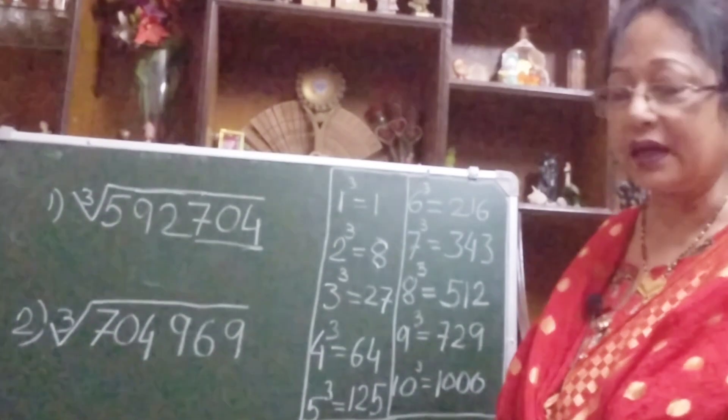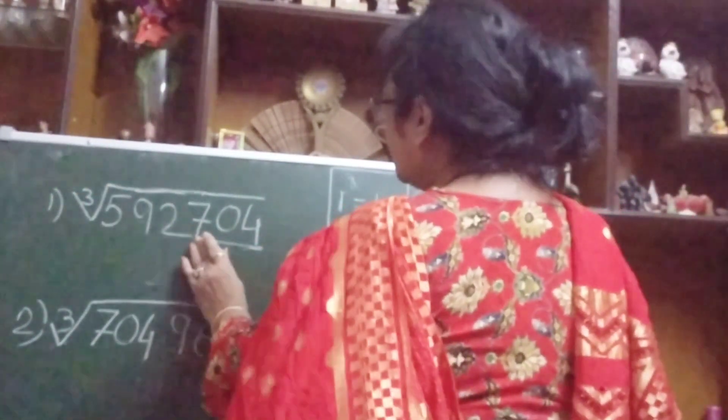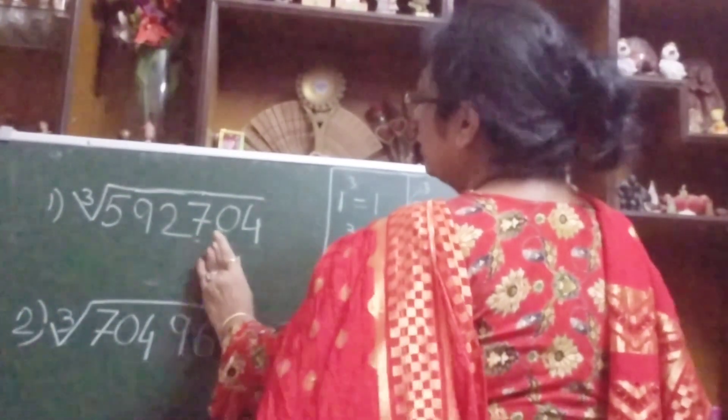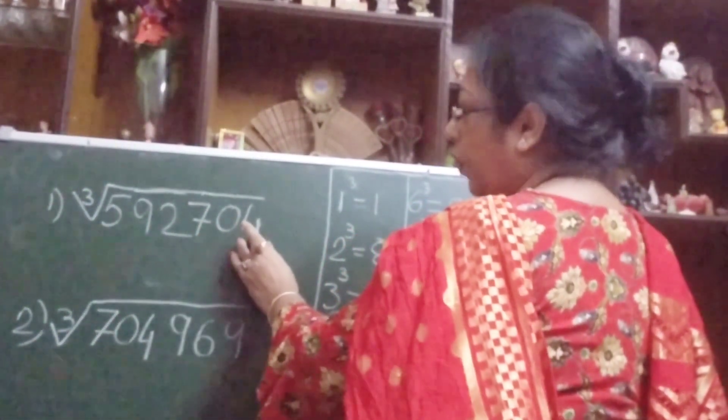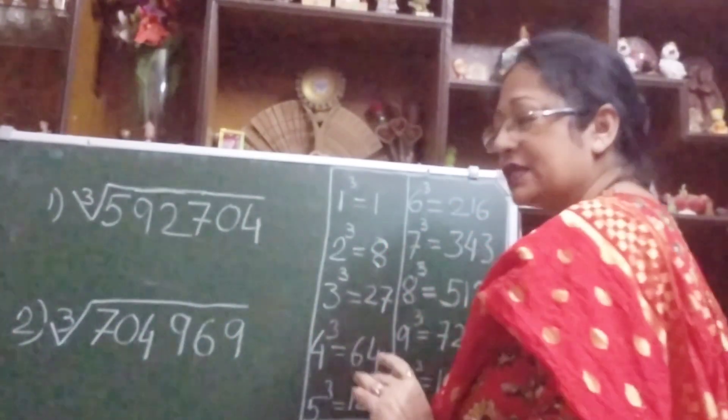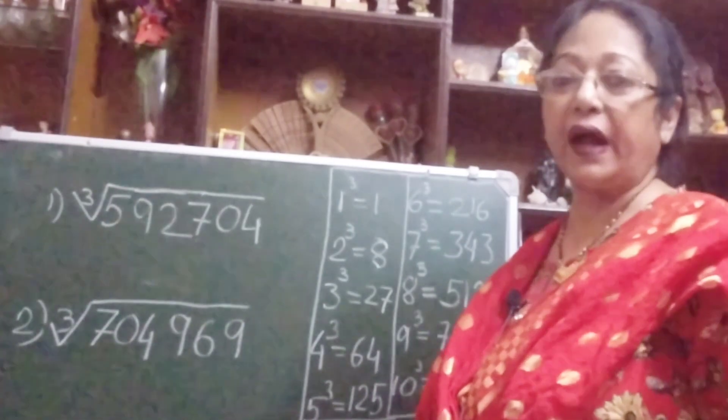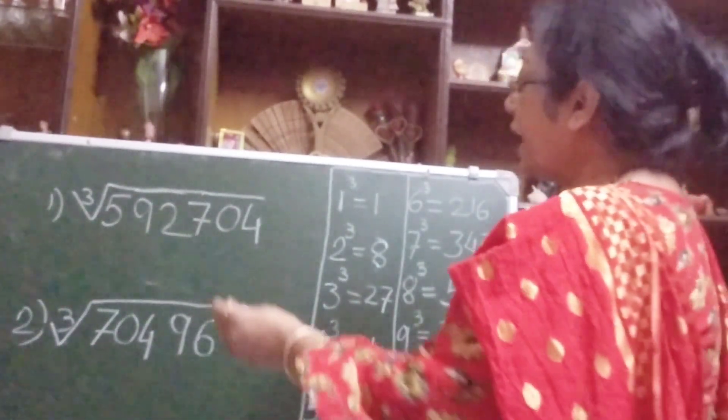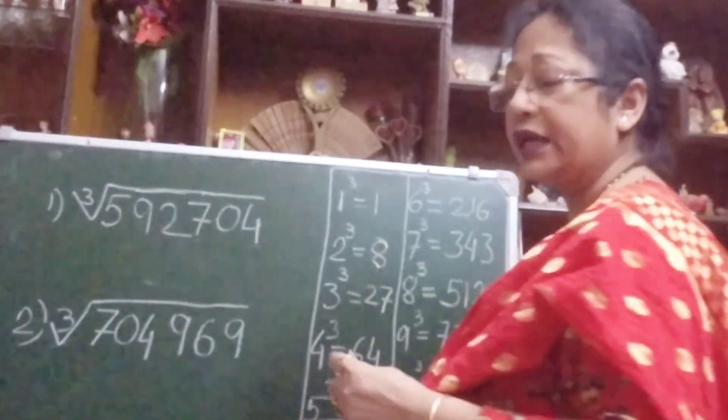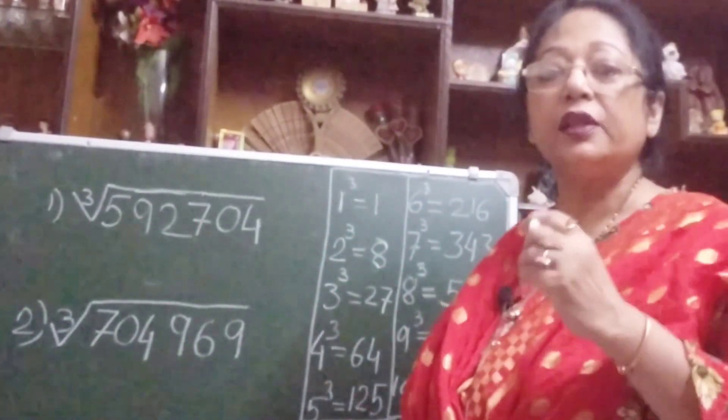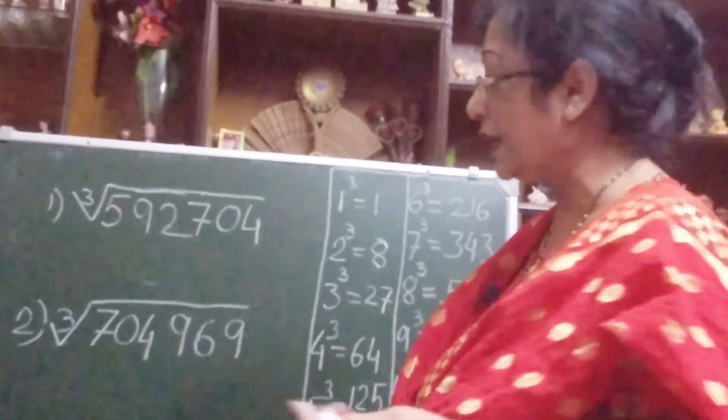So this number, cube root of 592704, we have to find the cube root of this. When you find cube root of 6-digit number, I will tell you one thing, that the answer will always come as a 2-digit number.